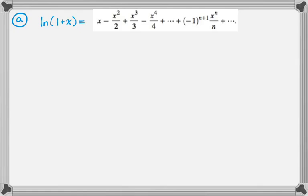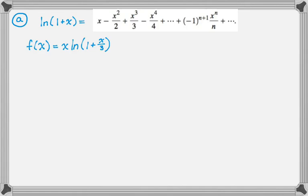We're given the series for natural log of one plus x — it's x minus x squared over two plus x cubed over three, and so on — and we're also given the nth term, which is useful. The first thing we're supposed to do is write the series for f(x) = x times natural log of one plus x over three. We can do this by direct substitution and then multiplication.